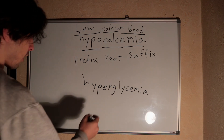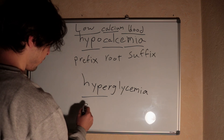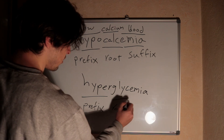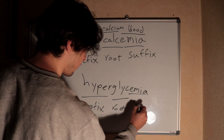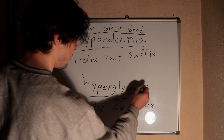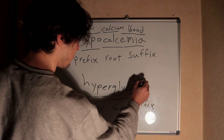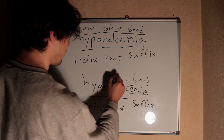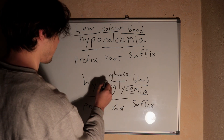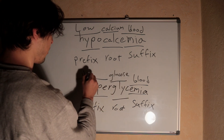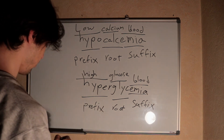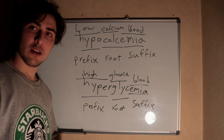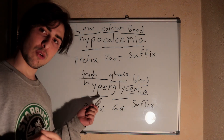Now hyperglycemia: 'hyper-' is the prefix meaning high, 'glyce' is the root — a shortcut for glucose or sugar — and 'emia' is the suffix meaning blood. So hyperglycemia means high glucose levels in the blood.